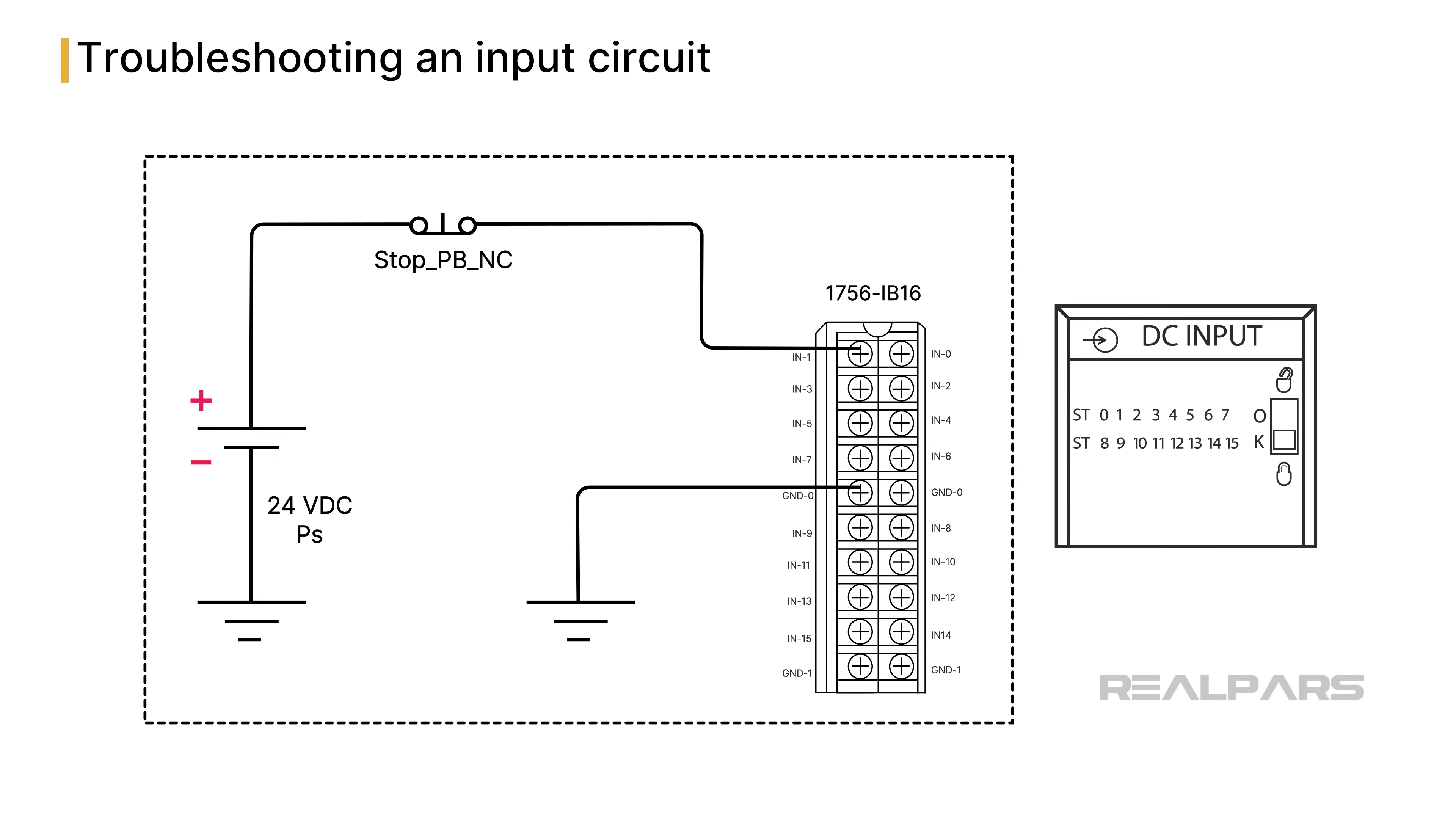The 1756-IB16 Digital Input Module's LED Input Indicator Panel is a powerful troubleshooting tool. It tells us whether each input is in a voltage on or voltage off condition. In our example, under normal conditions, the LED1 should be on due to the condition of the STOP-PB-NC switch.